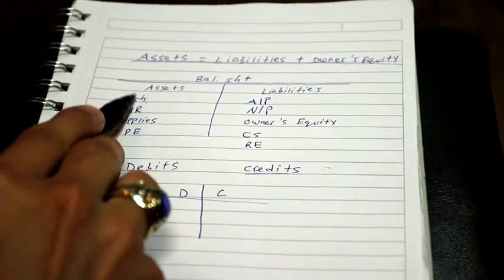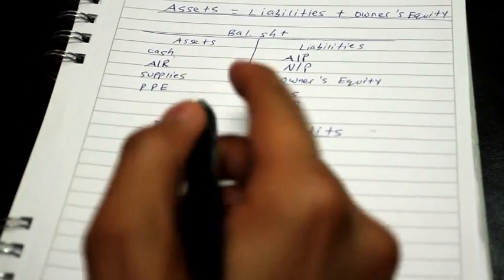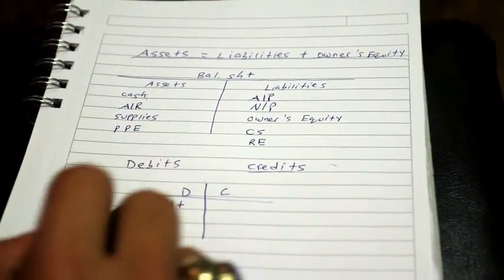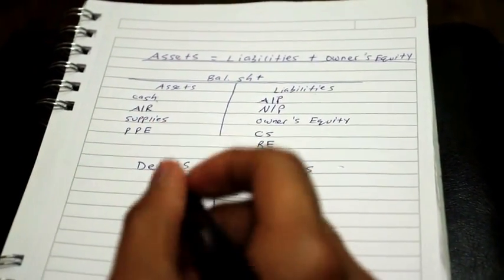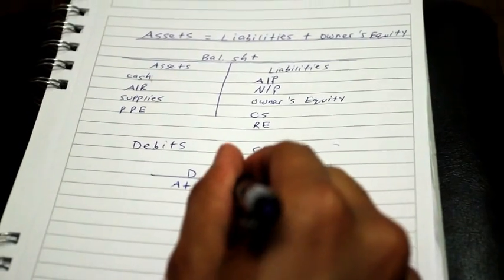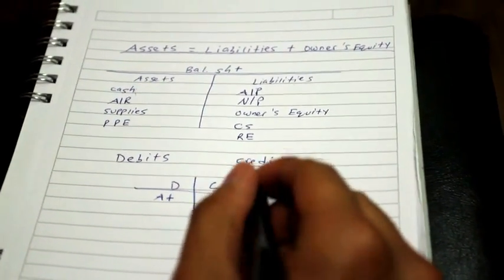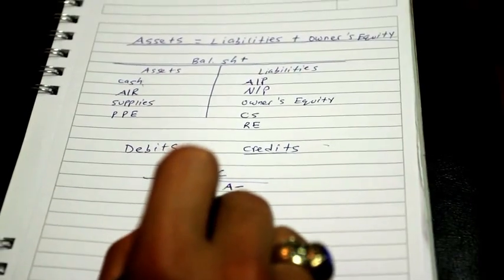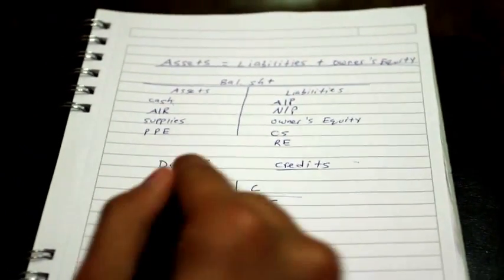Always debit when one of your assets, which is on the left side of the balance sheet, is increasing, meaning you as a corporation are receiving cash, for example. On the opposite end, you always credit an asset when the asset is going down, so for example, a payment of anything.